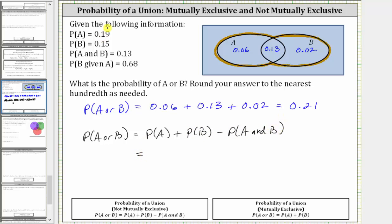Which in our case gives us 0.19 plus 0.15 minus 0.13, which also gives us 0.21. I hope you found this helpful.